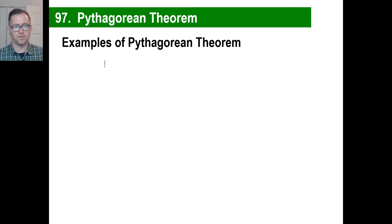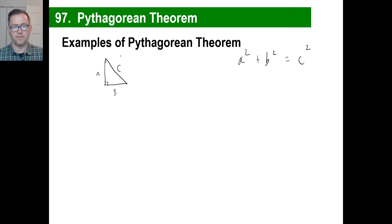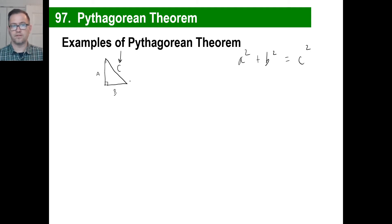Here are a couple of examples of the Pythagorean theorem. You want to memorize this, or write it down. We're going to take a right triangle and call this side A, this side B, and the hypotenuse is side C. It doesn't matter which side is A or B, as long as both are legs. C is always the hypotenuse. You take the length of side A and square it, add it to the length of side B squared, and this gives you the length of side C squared — then just take the square root to find the length of side C.